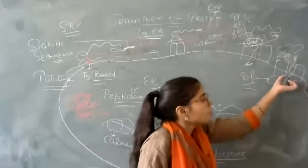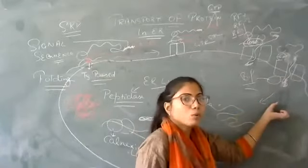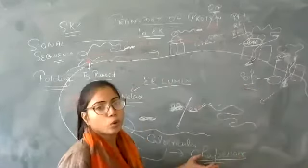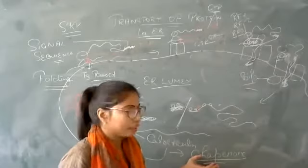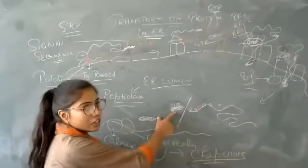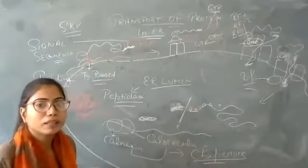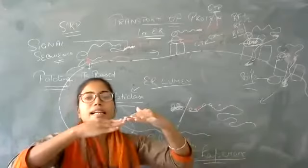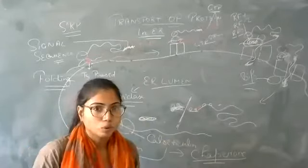For this polypeptide chain, there is a protein called BIP. BIP is a chaperone protein responsible for protein folding. The protein has a signal sequence and is made of amino acids connected by peptide bonds.